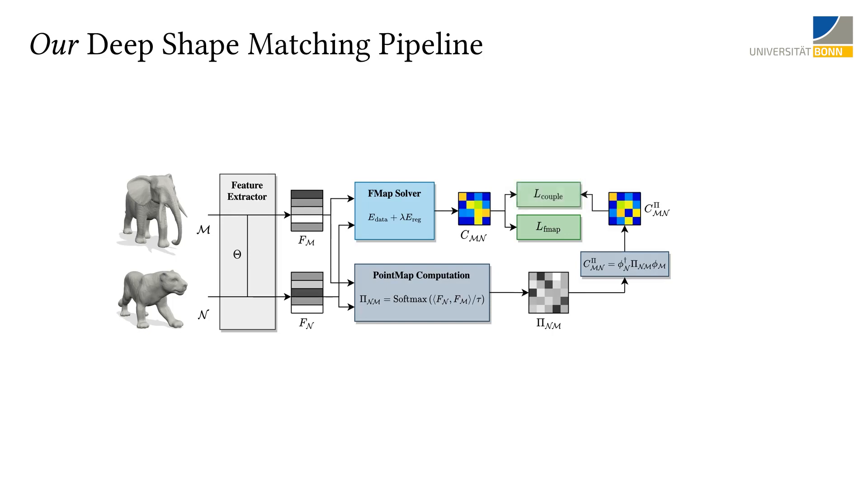The resulting functional map is used in our coupling loss term. We expect that the functional map predicted by the functional map solver and the functional map predicted based on similarity of features should be similar. During test time, we directly use the point map to compute matchings between both shapes.